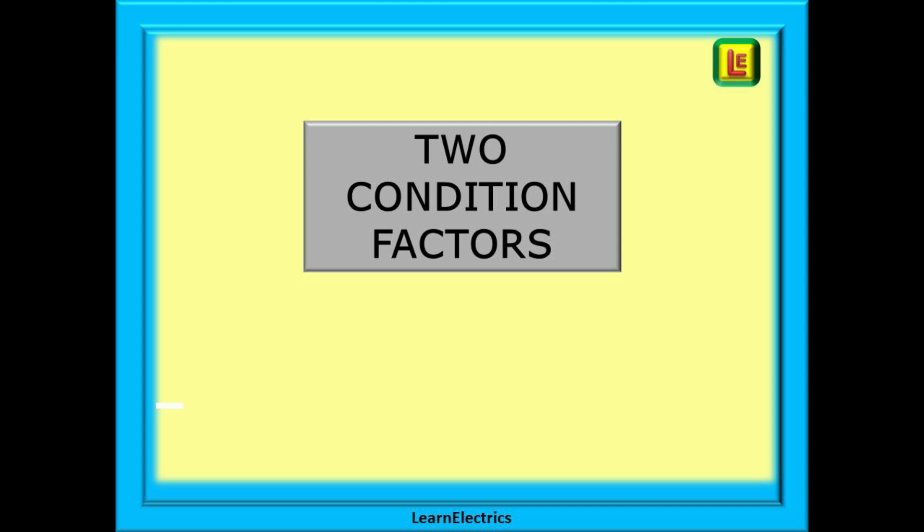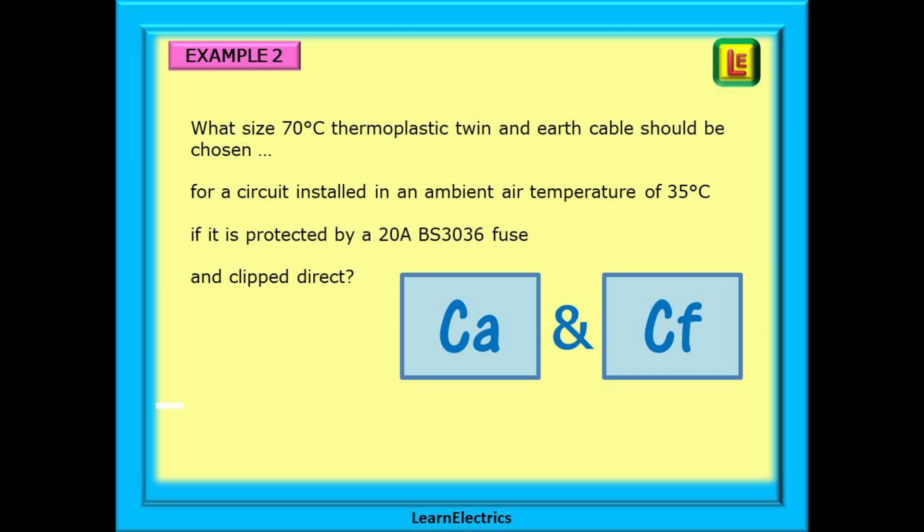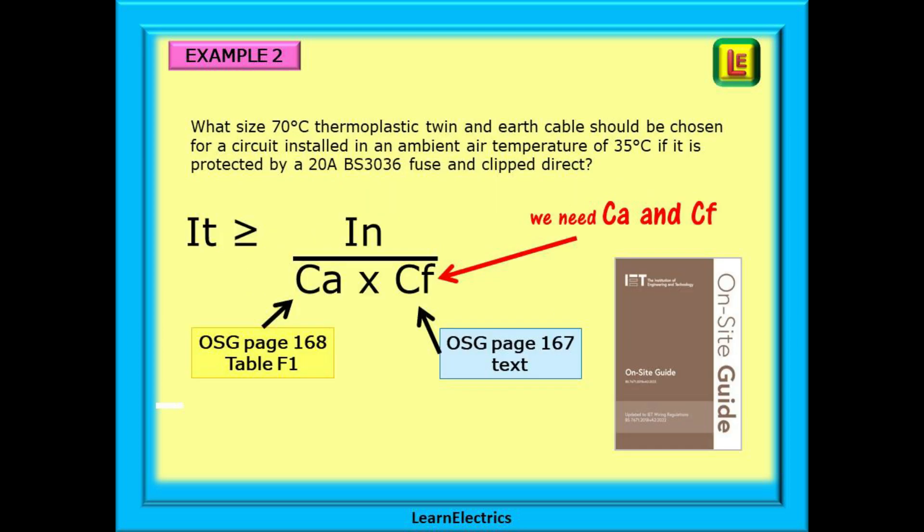Let's try two condition factors now. We are asked what size 70 degrees centigrade thermoplastic twin and earth cable should be chosen for a circuit installed in an ambient air temperature of 35 degrees centigrade if it is protected by a 20 amp BS3036 fuse and clipped direct. We've kept this the same as the last example, just added on another factor so that you can see how they build up. Now, we will need condition factors for CA and CF. We only need these two factors and we will stick with the onsite guide. Table F1 on page 168 for CA and the text at the bottom of page 167 for CF.